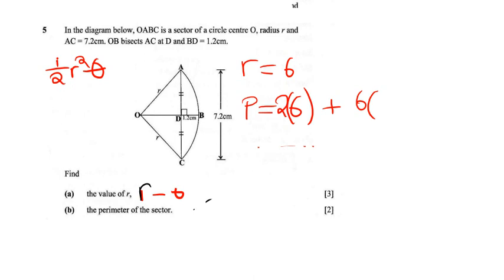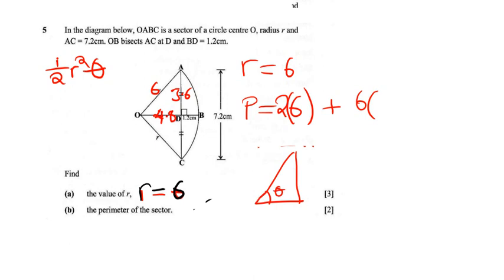We know R is equal to 6, and we know this angle is 90°. Now if our radius is 6 and that is 1.2, then OD is going to be the radius 6 minus 1.2, so OD is 4.8. And we know AD is half of AC, so 7.2 into half gives us 3.6. We know the radius is 6, so we've got all three sides of the triangle. We can use trigonometry to find the angle theta.